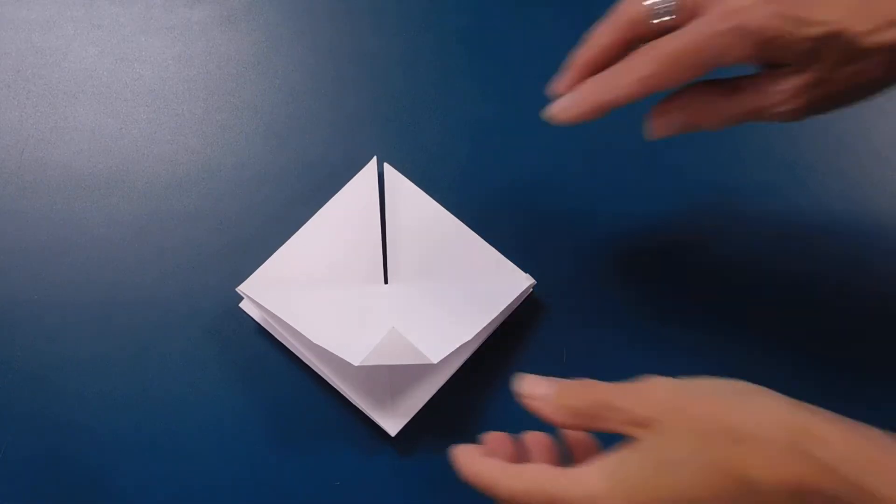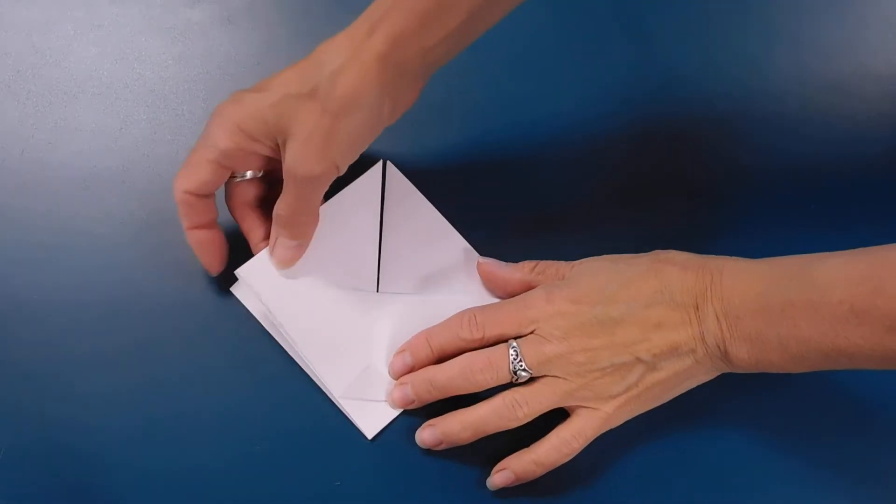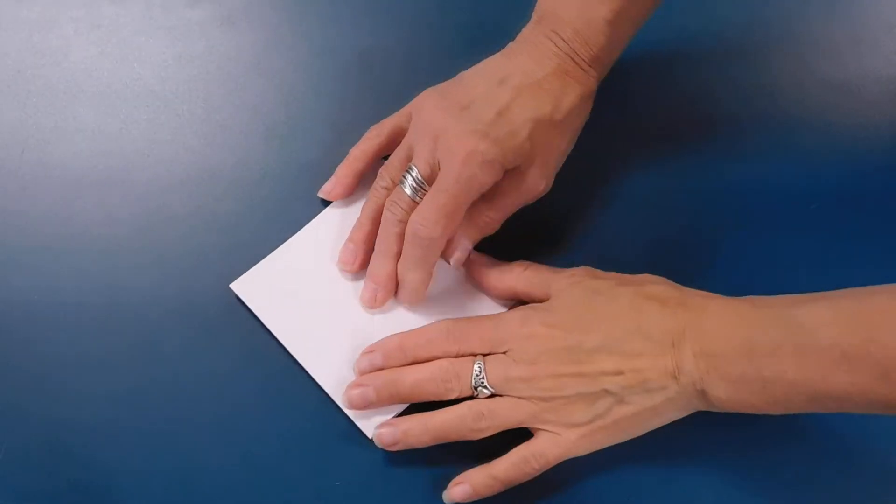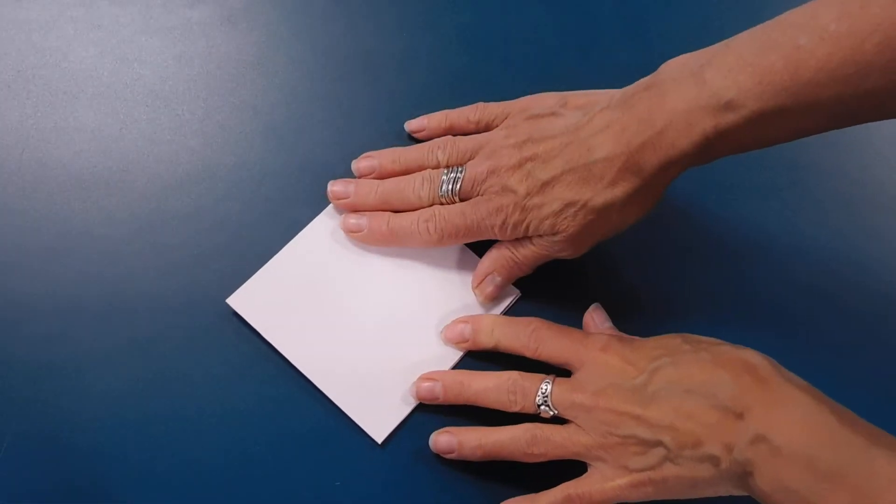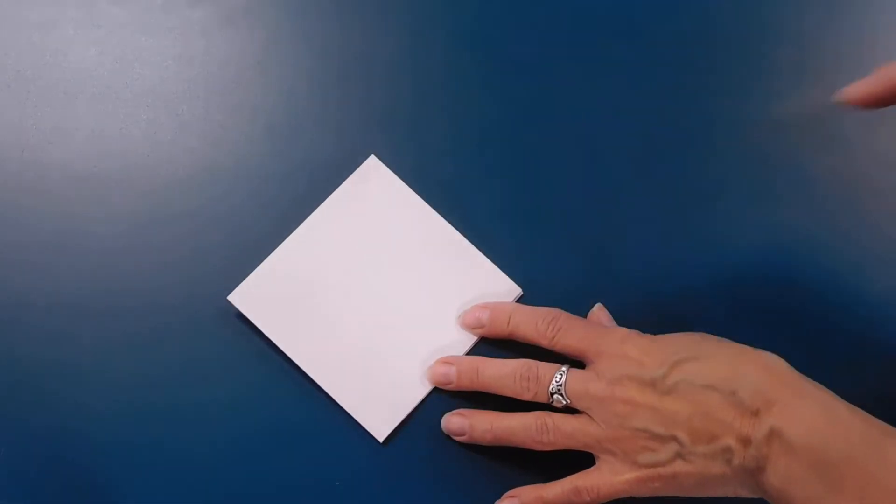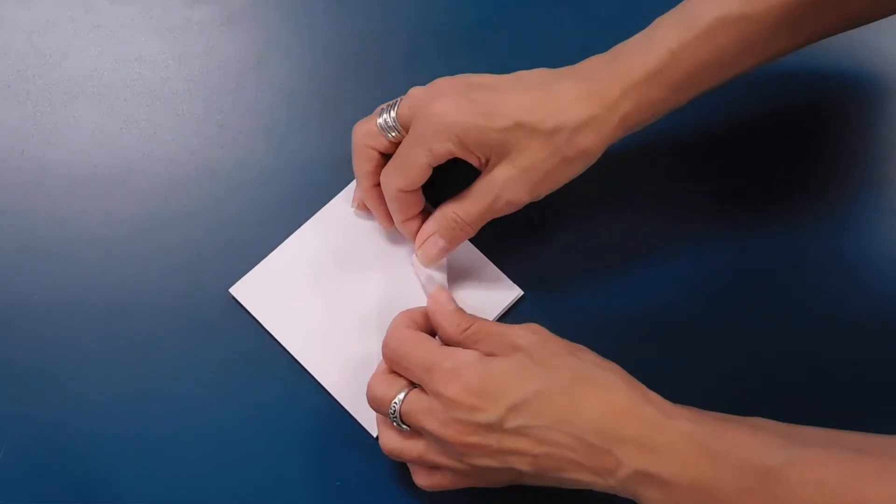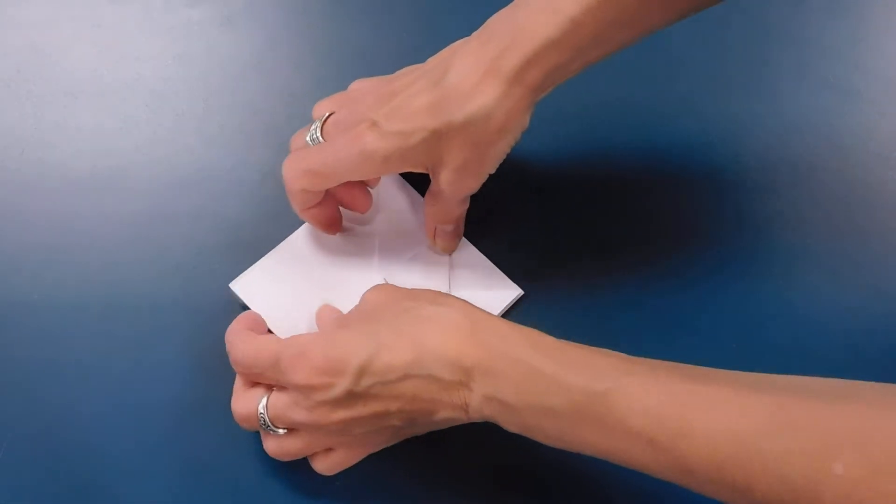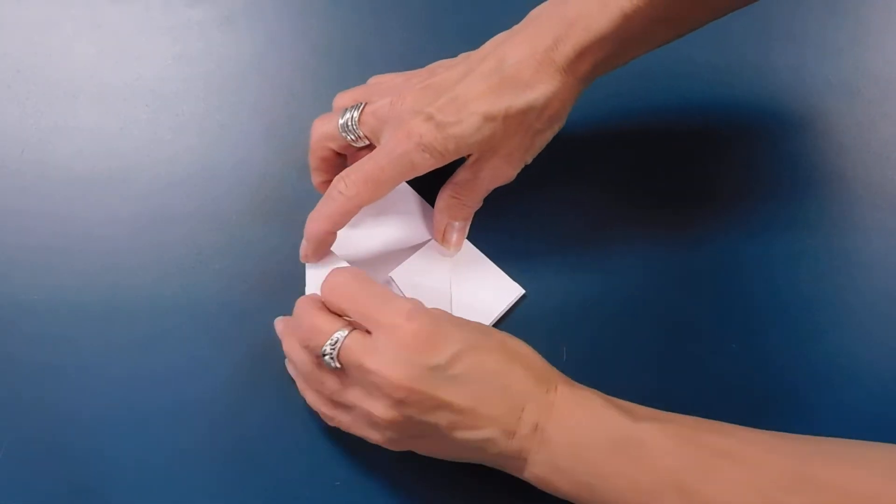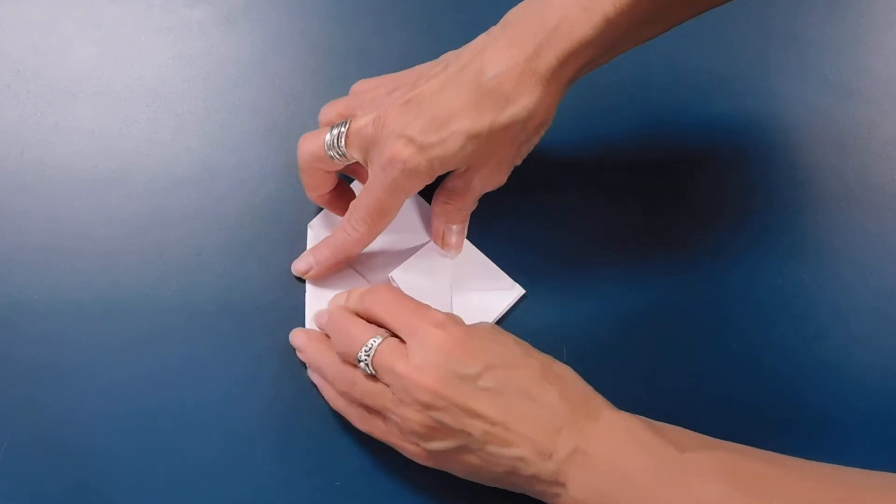So now we are going to take this left hand part and fold it over. And we've got just a flat diamond shape there. Fold this corner over to there. And then we're going to fold that left corner layer over to the right.